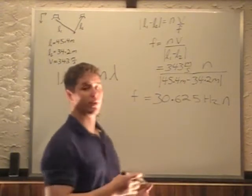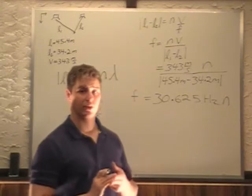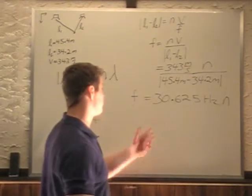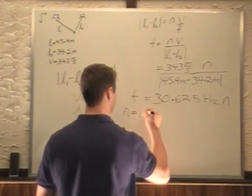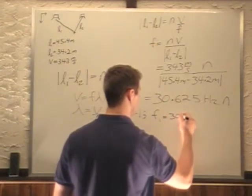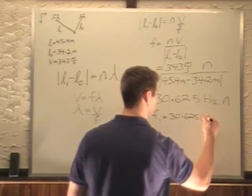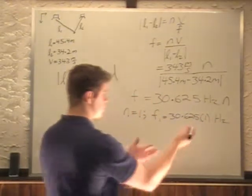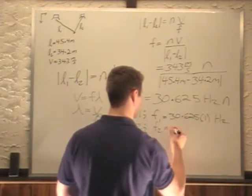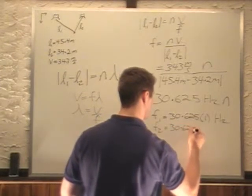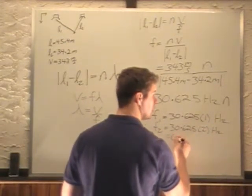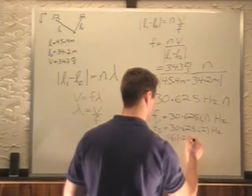So N can be integer one, two, three, four, five, so on. And we want the two lowest that we can actually hear. Now we're told that our range of hearing is from 20 Hertz to 20 kilohertz. So right off the bat, if we look, if we say N equals one, plug one in. So F at N equals one is equal to 30.625 times N of one Hertz. So that's just 30.625. Do the same for N equals two. So 30.625 times two Hertz, which gives us 61.25 Hertz.